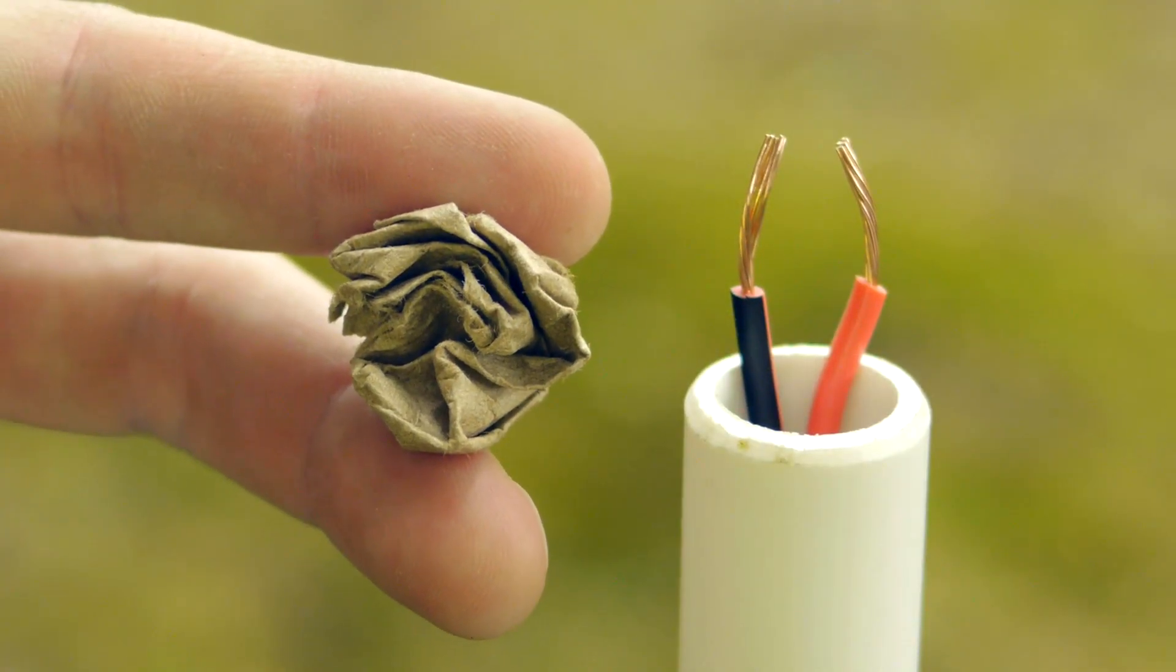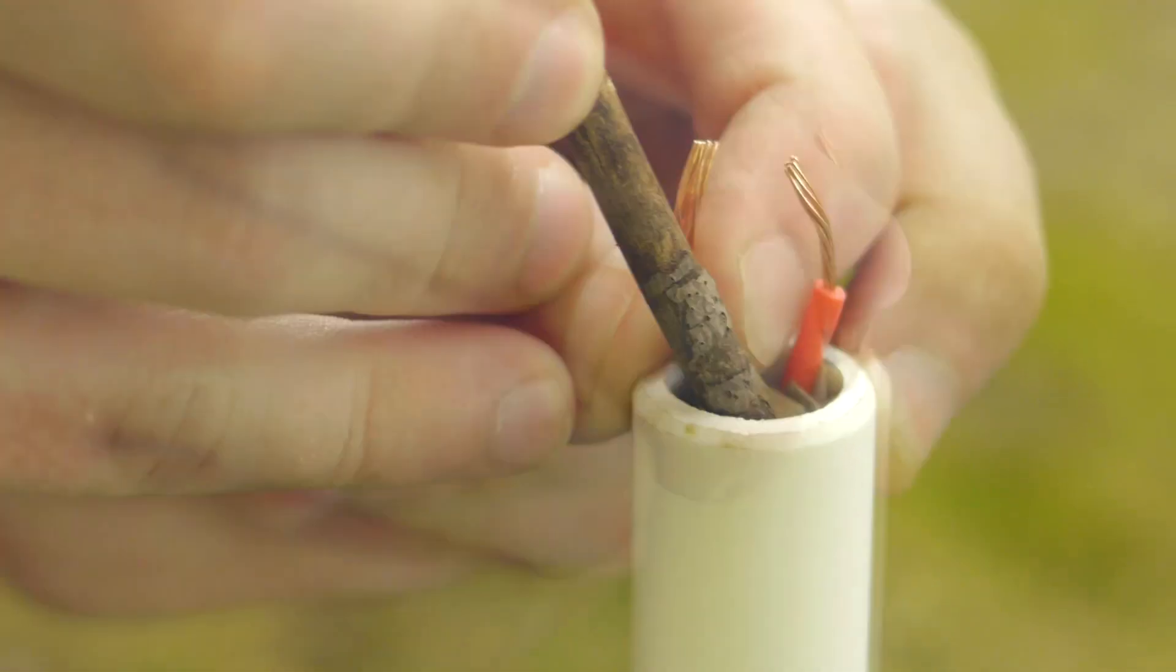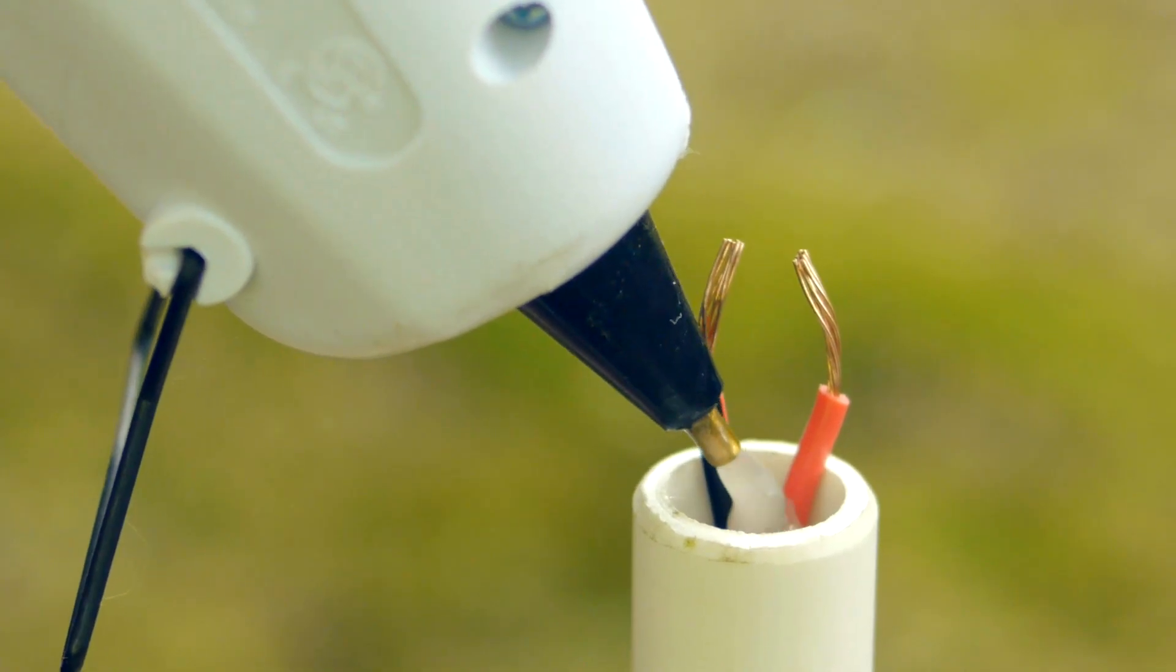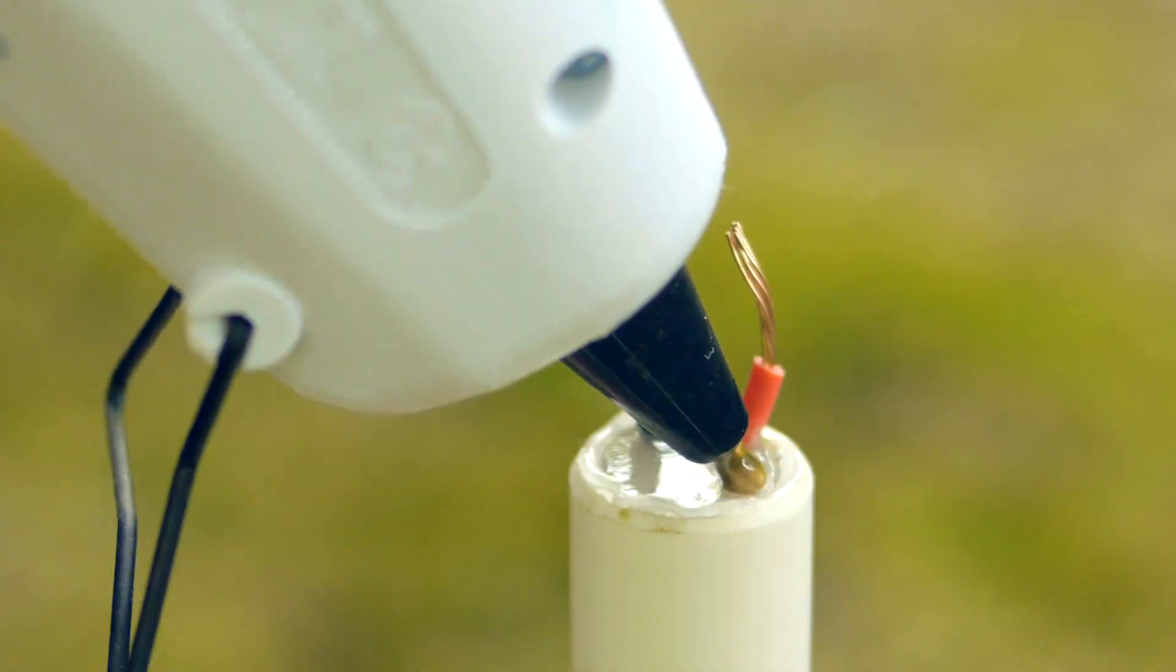To keep the ignition wires aligned, a wad of paper is pushed into the pipe as a plug, about half an inch deep. Hot glue is then used to fill the opening, permanently holding the wires in place.